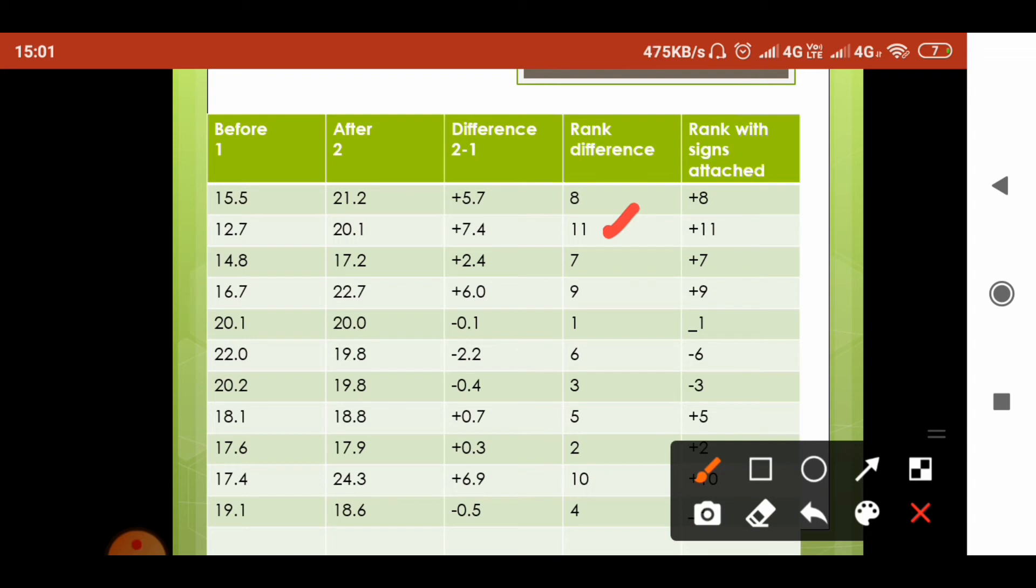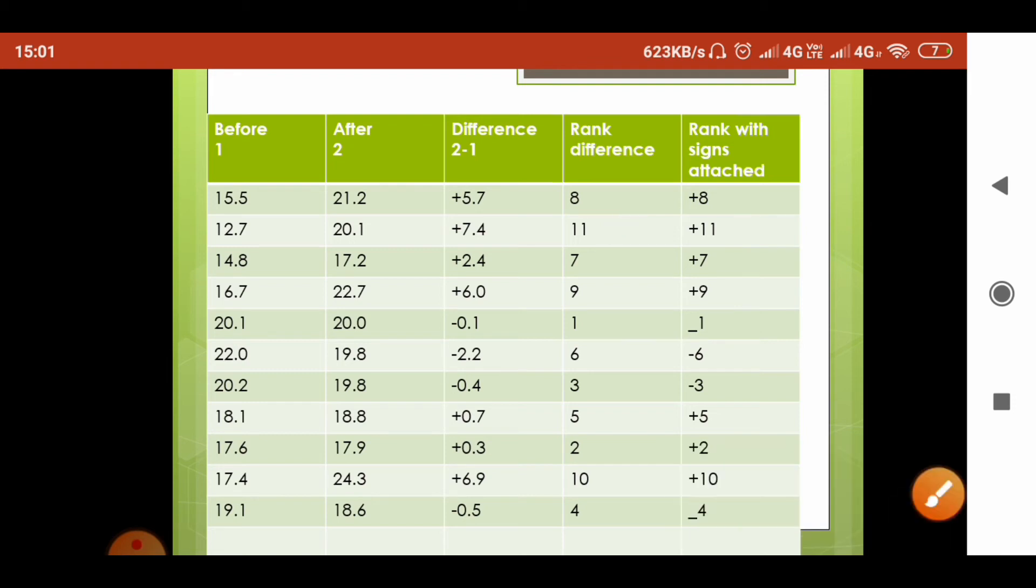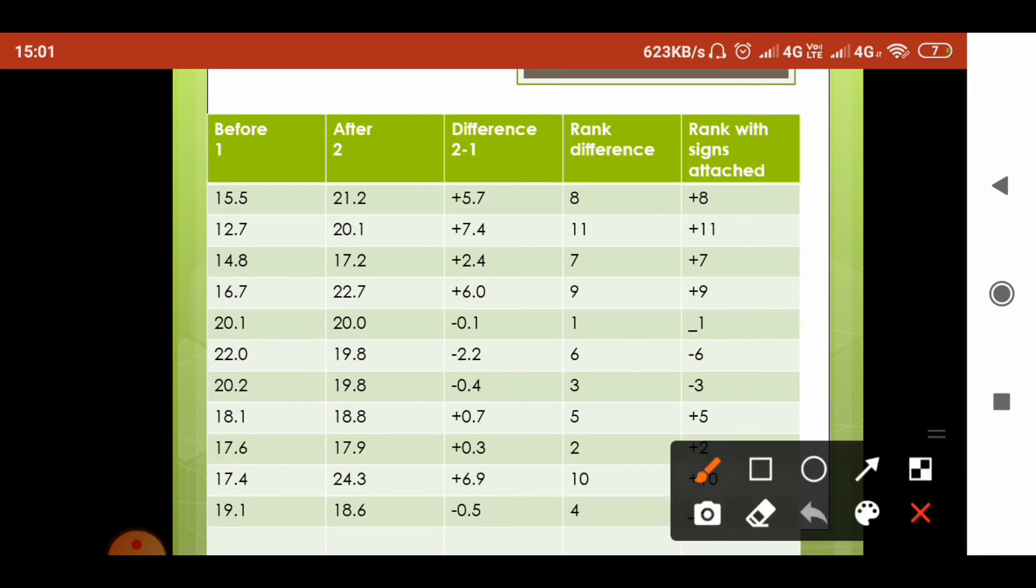Then you give the sign to each of these ranks. The 8 is given as plus 8, and the minus values, for example minus 0.1, we give as minus 1. Thus we attach signs to the ranks.